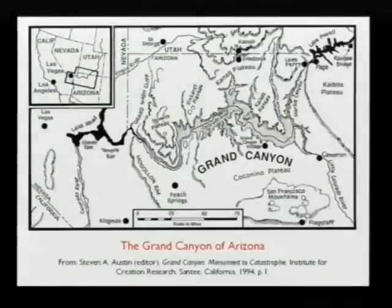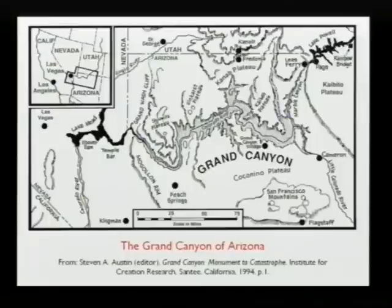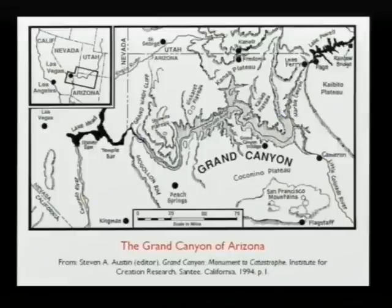Before looking at the evidence in detail, let me begin with an overview of Grand Canyon itself. Here we have a map of Grand Canyon in its setting in the state of Arizona. Grand Canyon stretches 277 miles through northern Arizona from Lake Powell in the east to Lake Mead in the west. The main portion attains a depth of more than a mile and ranges from 4 to 18 miles wide. Along with its 60-mile connection through Marble Canyon, it isolates virtually the entire northwestern corner of Arizona.